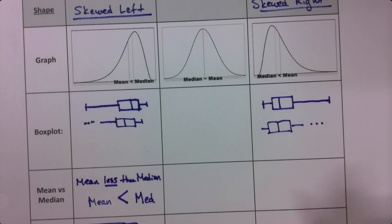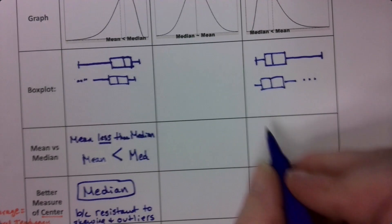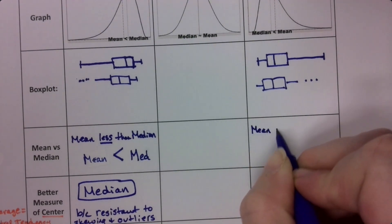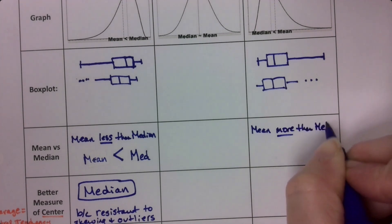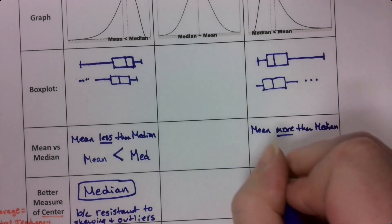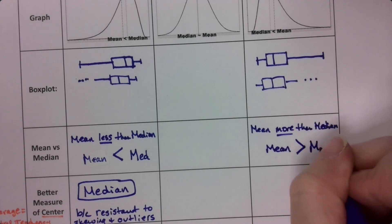Don't forget that dots count. And then that would mean that the mean is more than the median.